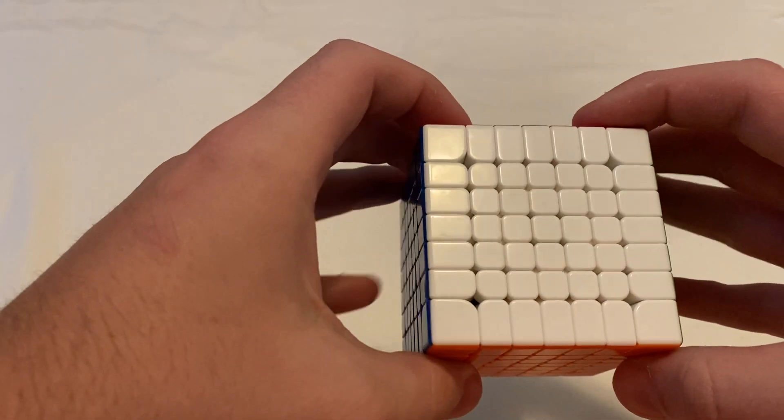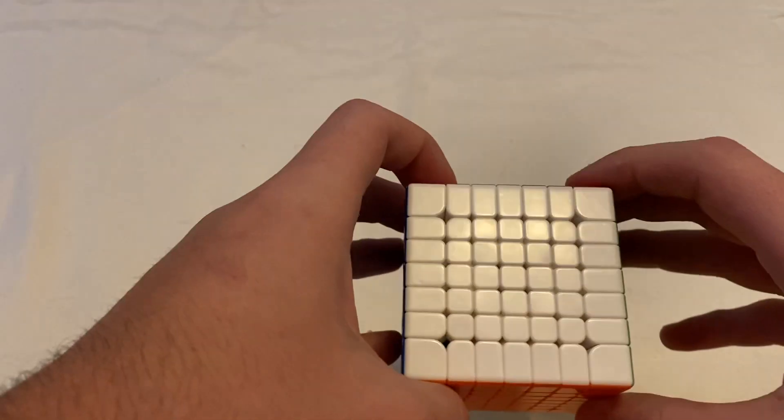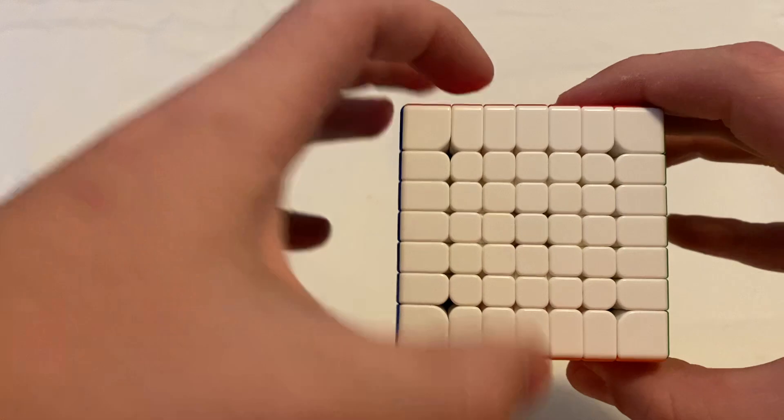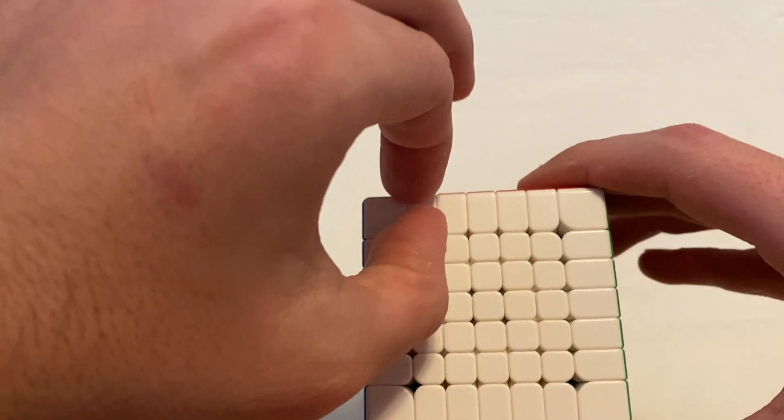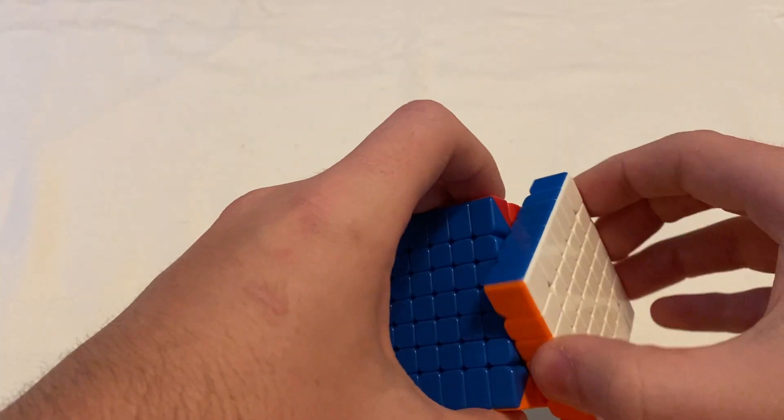Hey guys, Jacob here. In this video I have something really cool to show you. Before I show it, I first want to explain that on bigger cubes, specifically 7x7 and bigger, notice how the outer layer is thicker than the inner layers.